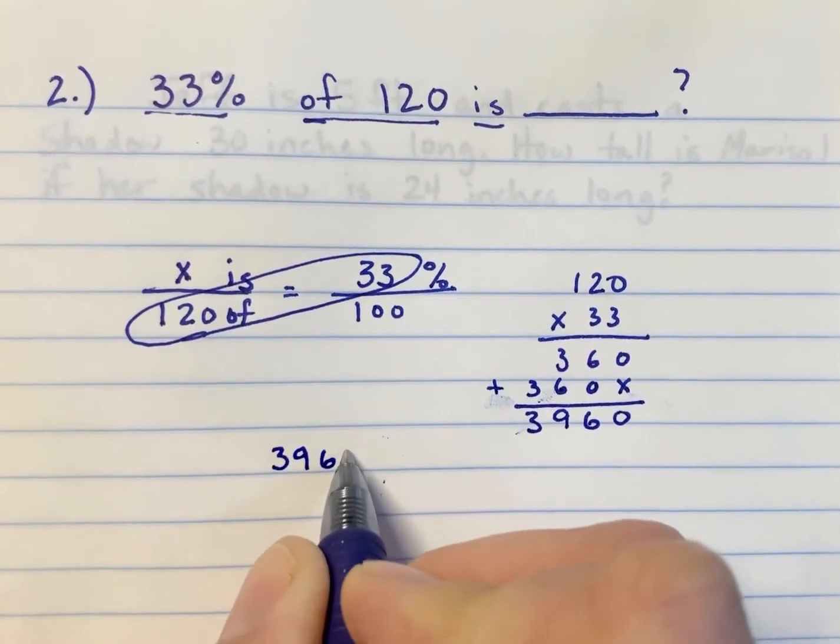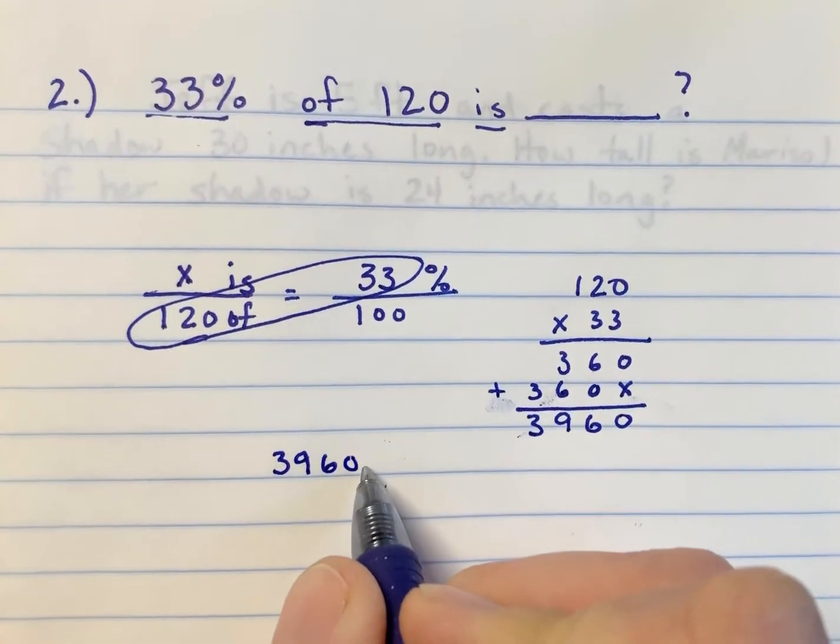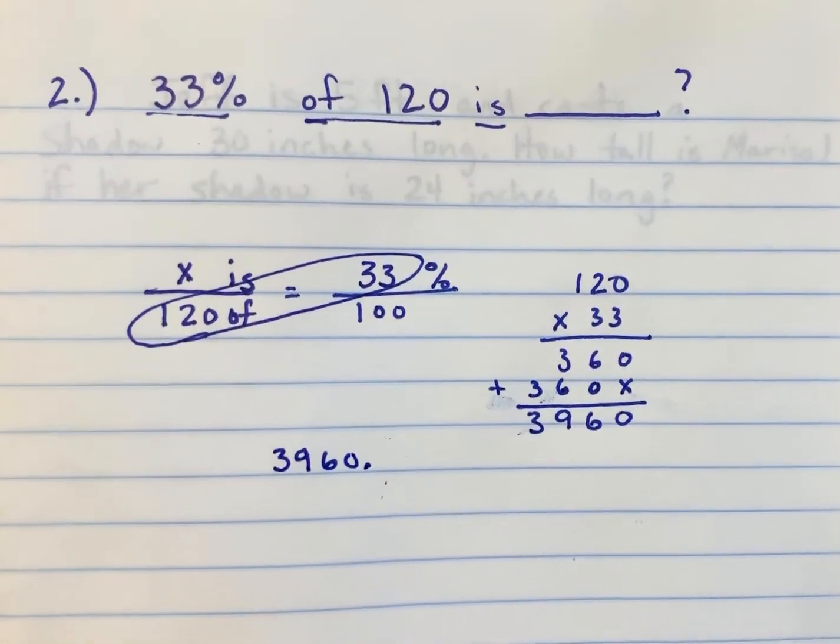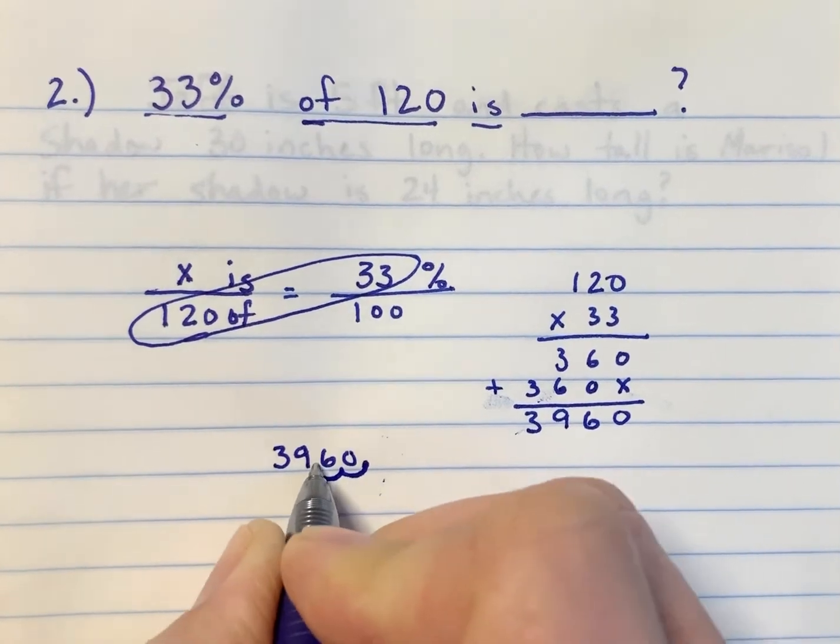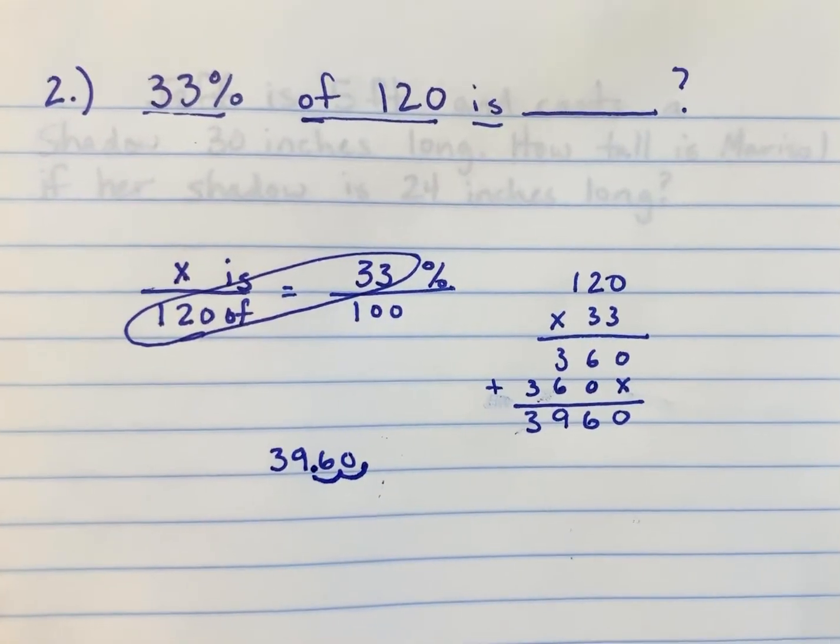I can do that long method of division, or I can put a decimal at the end of this number and move it to the left twice. Moving a decimal to the left twice is the same thing as dividing it by 100.